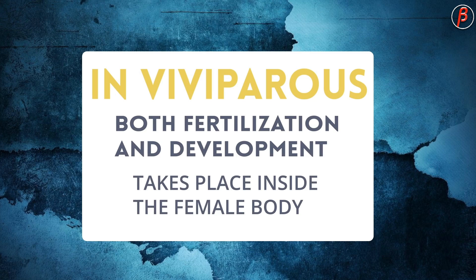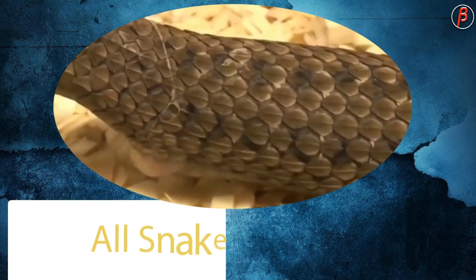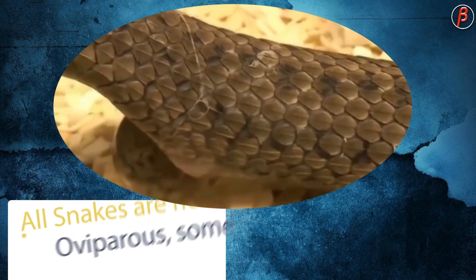In viviparous animals, both fertilization and development take place inside the female body. This period of development of an individual inside the female body is also known as the gestation period. It varies from organism to organism.